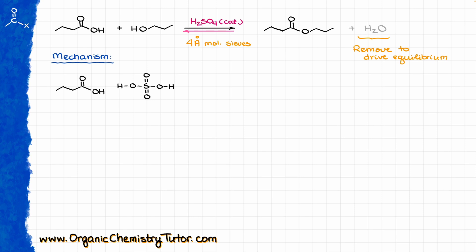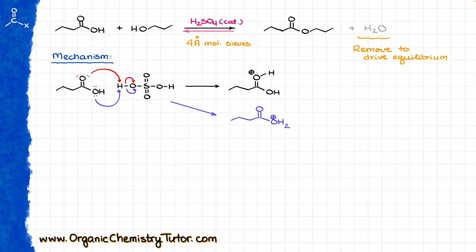Sulfuric acid is a very strong inorganic acid and it can easily protonate the carboxylic acid. There are two places where protonation can occur: we can either protonate the upper oxygen, the part of my carbonyl, or we can protonate the other oxygen — the OH group. But that raises a reasonable question: which protonation is correct? While we may want to make the OH into our leaving group, this is actually not the way to go. The correct protonation is going to be at the carbonyl.